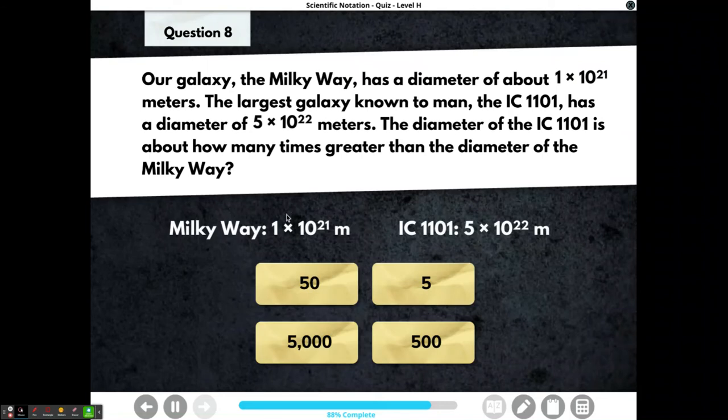Our galaxy, the Milky Way, has a diameter of about one times ten to the twenty-first meters. The largest galaxy known to man, the IC 1101, has a diameter of five times ten to the twenty-second meters. The diameter of the IC 1101 is about how many times greater than the diameter of the Milky Way?